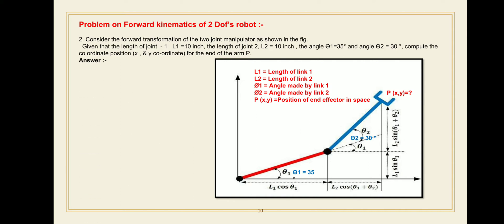First, write the given data. L1, the length of link number one, is 10 inches. L2 is again 10 inches. Theta 1, the angle made by link number one and the horizontal axis, is 35 degrees. Theta 2, the angle made by the axis of link number one and the axis of link number two, is 30 degrees. You have to find out the Cartesian space coordinates X and Y.